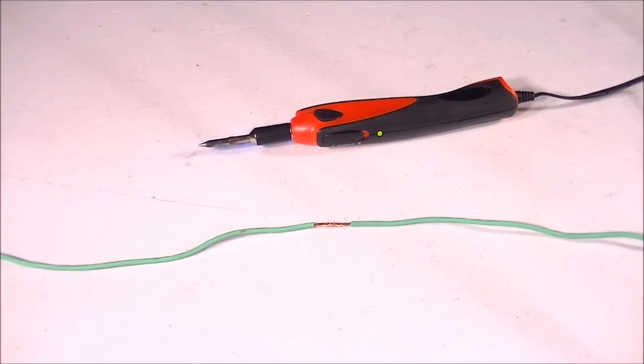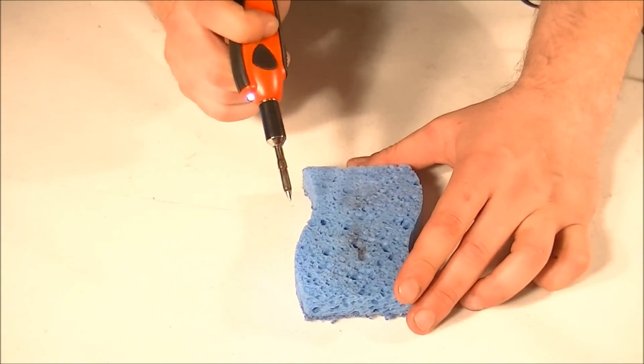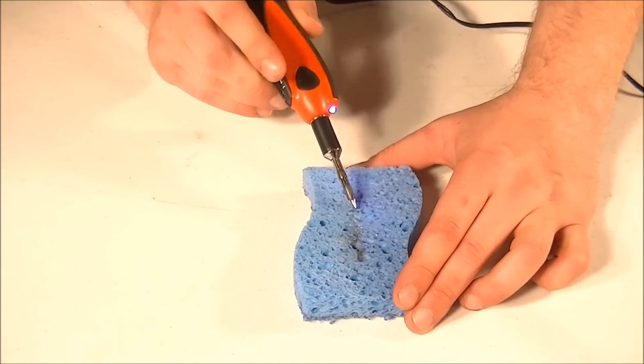Now that the wire is twisted together let your iron heat up to its operating temperature. This Weller model lights up green when ready. Wipe the tip on a damp sponge to remove any previous build up.